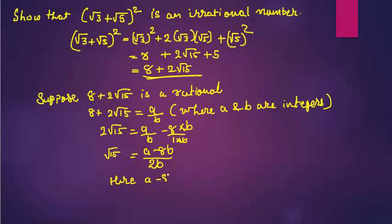(a - 8b)/(2b) is a rational number, as a and b are integers. So if RHS is rational, you have to say √15 is also rational.